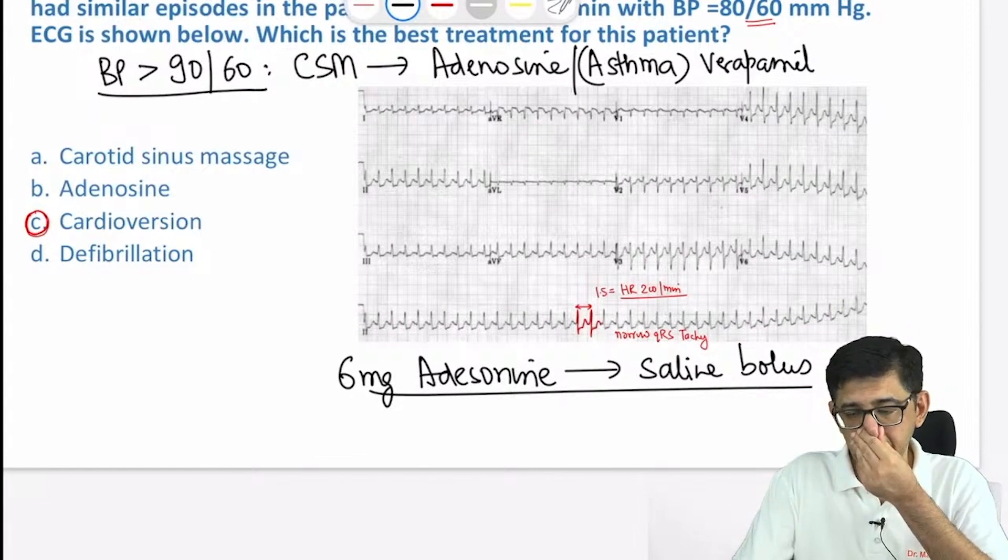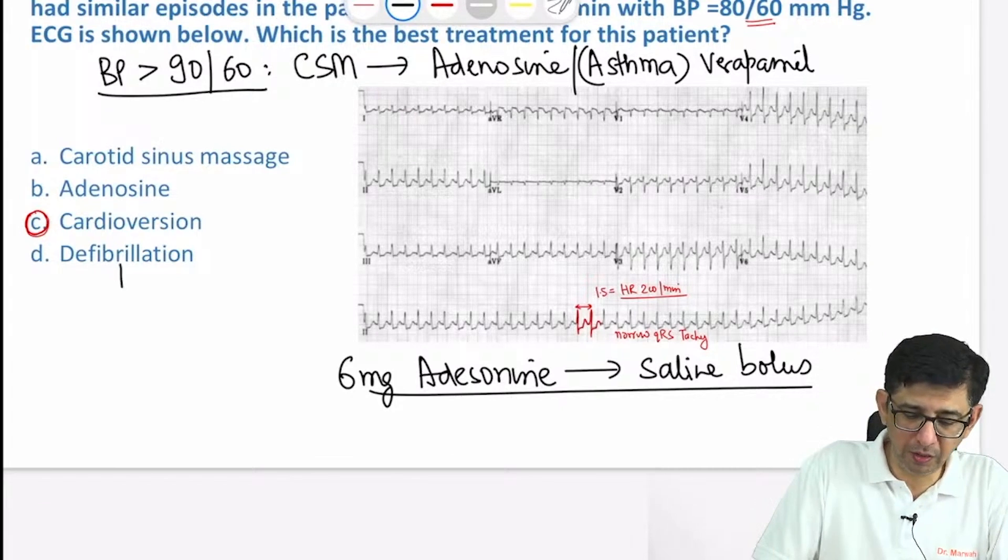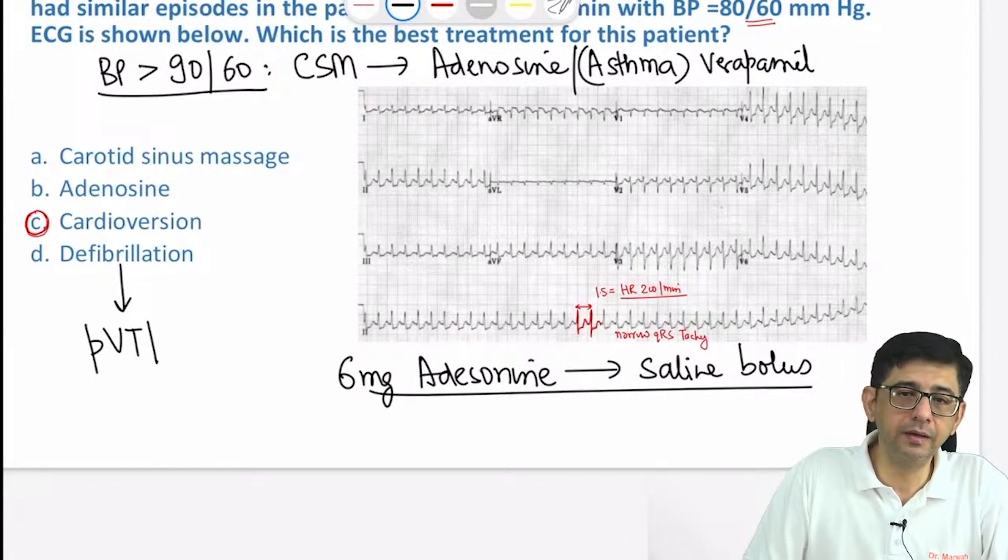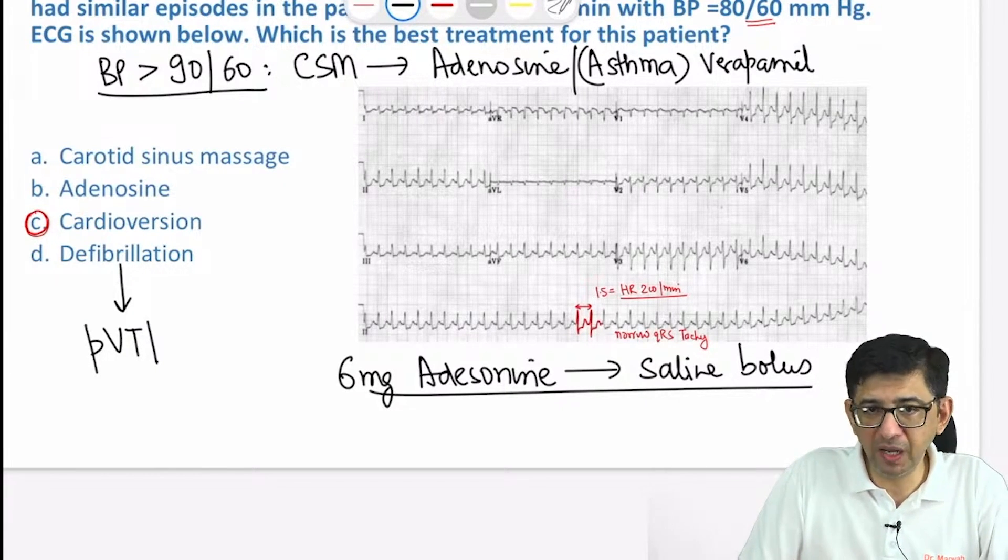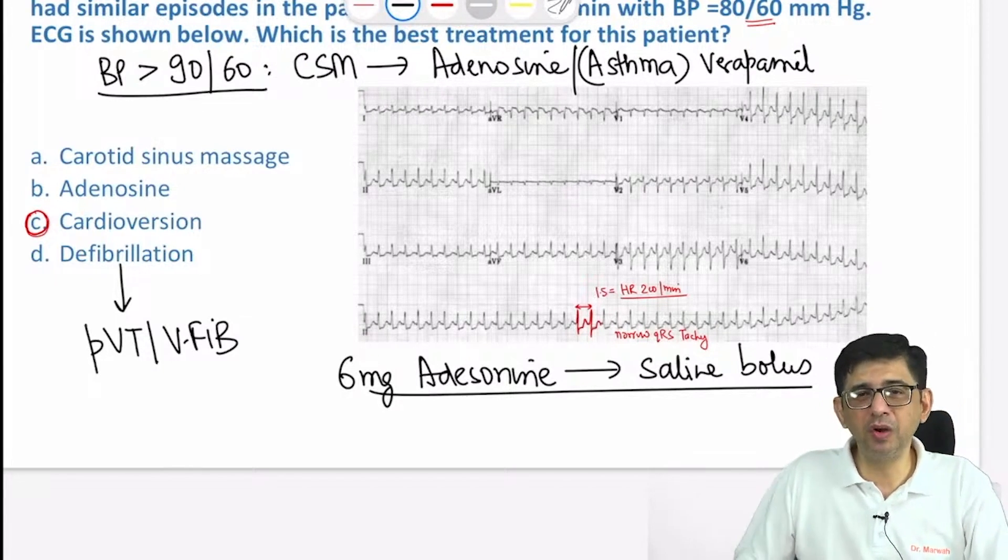Defibrillation is for ventricular tachycardia. It's actually for VT, not exactly VT. If it is VT with a pulse, we can try cardioversion in a patient, specifically for VT and ventricular fibrillation.